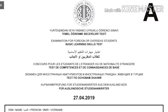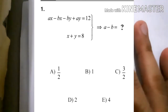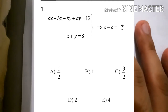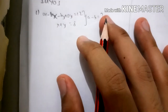Let's divide this part into multiple parts so that the solution is comfortable to discuss. For number one: ax minus bx minus by plus ay equals 12, and x plus y equals 8. What is a minus b?